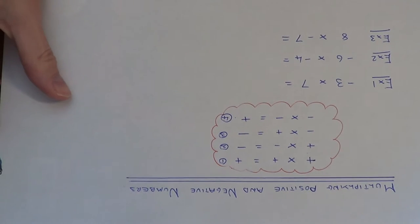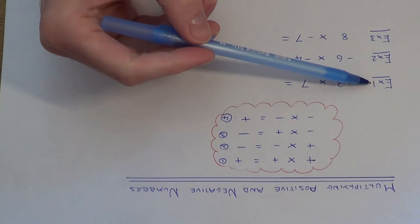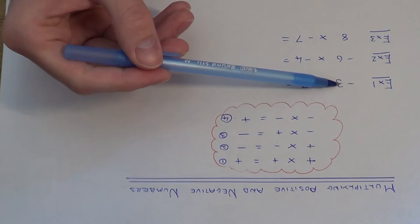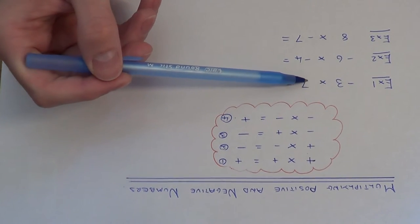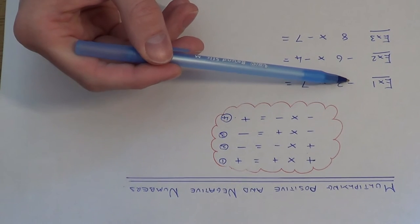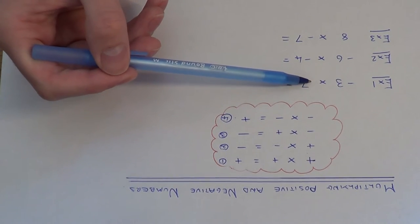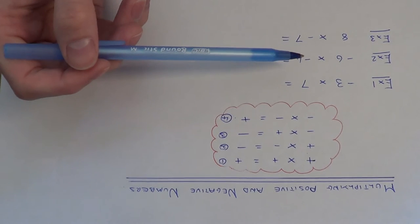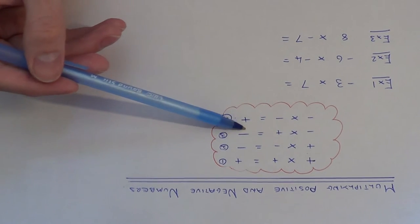So let's use these four rules to do these three examples. Example one: we've got minus three times seven. So we've got a negative number times a positive number. This is rule three.